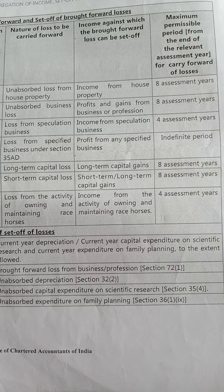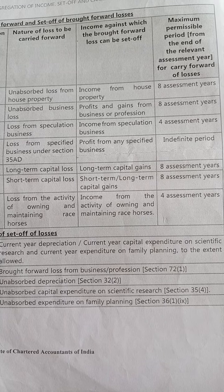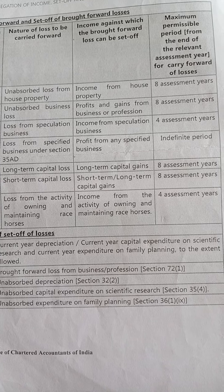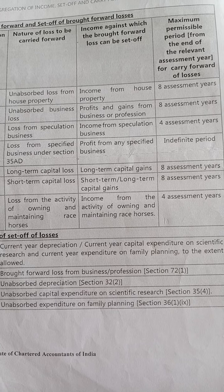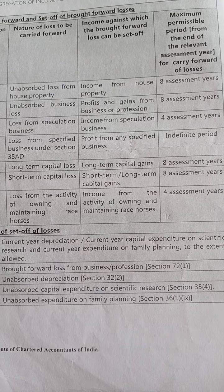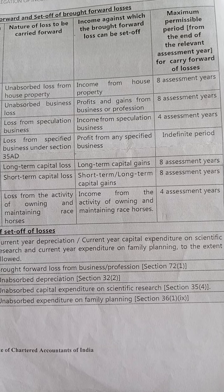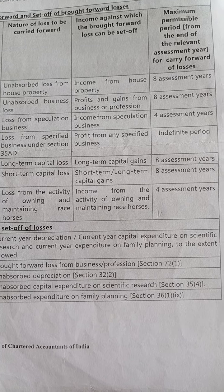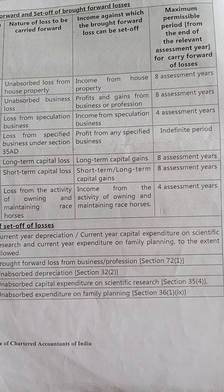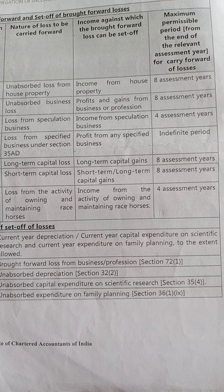Note that both long-term and short-term capital losses belong to the same head — capital gains — but long-term capital loss still cannot be set off against short-term capital gain. Loss from the activity of owning and maintaining race horses will be set off against income from that source only, and the maximum permissible period is four years. To summarize: speculation business and race horses have a four-year limit; others have eight years; and specified business has no time limit.